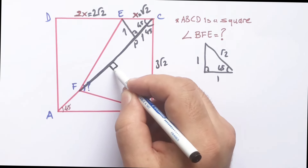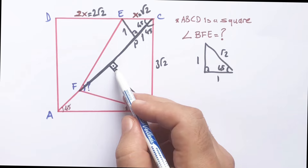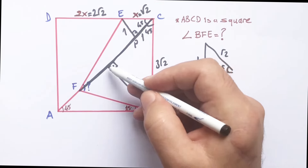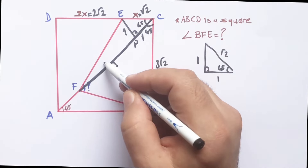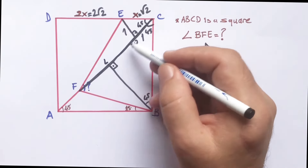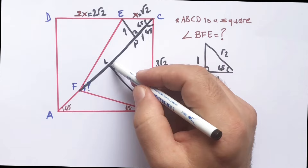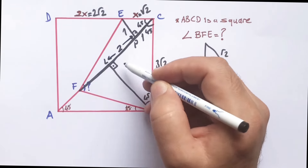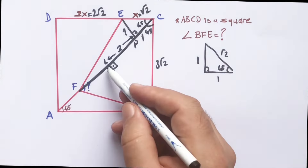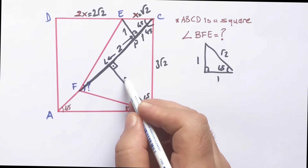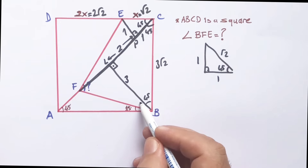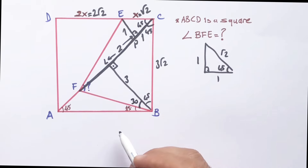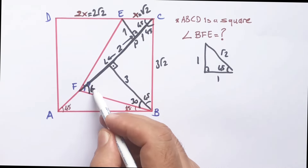Let's draw one more perpendicular across to 45 degrees. If the hypotenuse is 3 root 2 and this angle must be 45 degrees, this length is 3 units and this length is also 3 units. So 2 units are left here. This length is also 3 units. And if here is 15 and 45 degrees, this angle must be 30 degrees.